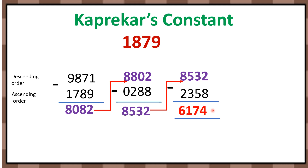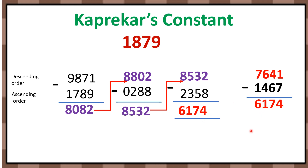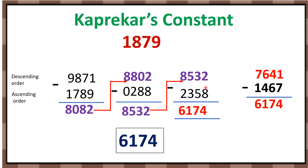Now, 6174 is the mysterious number. But if you want to repeat this process again, you can. In descending order it will be 7641 minus 1467 — the ascending order of 6174 — and again we will get 6174. If you repeat it further, it will always end at 6174. That's why this number is known as mysterious. You can observe that we got 6174 in just 3 iterations.